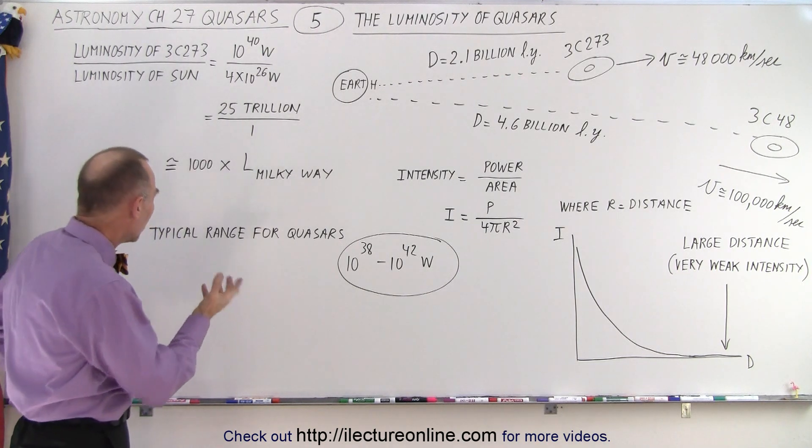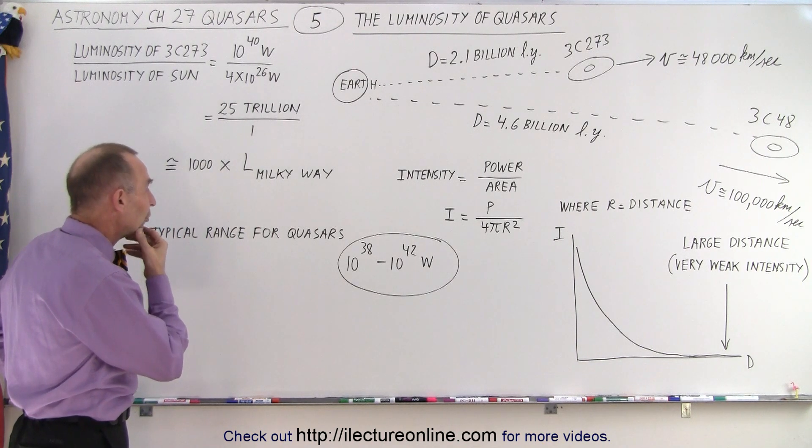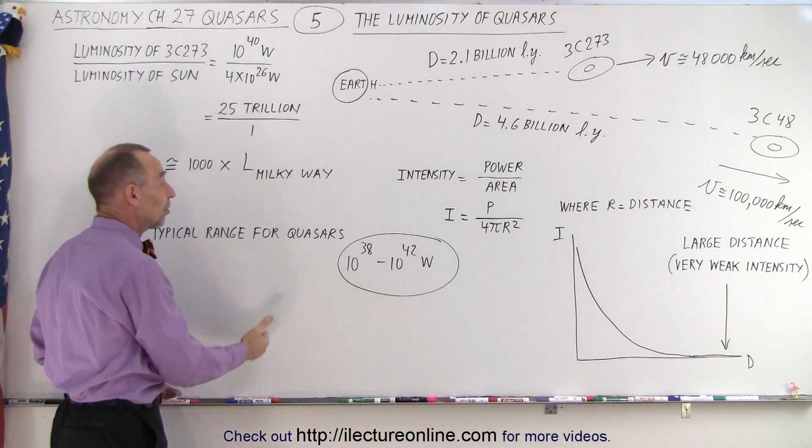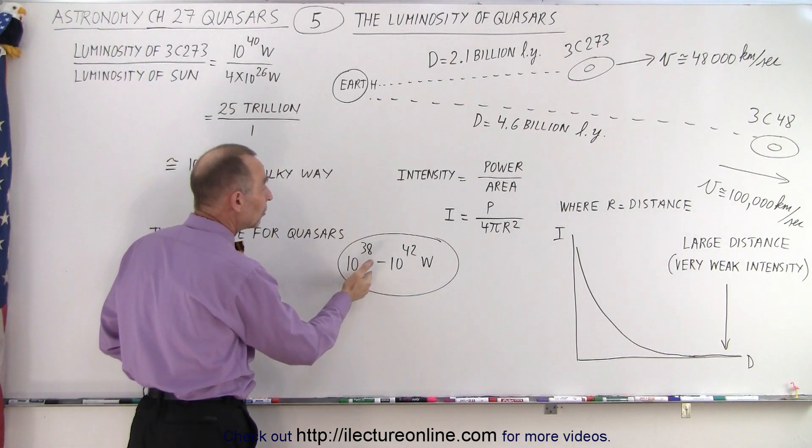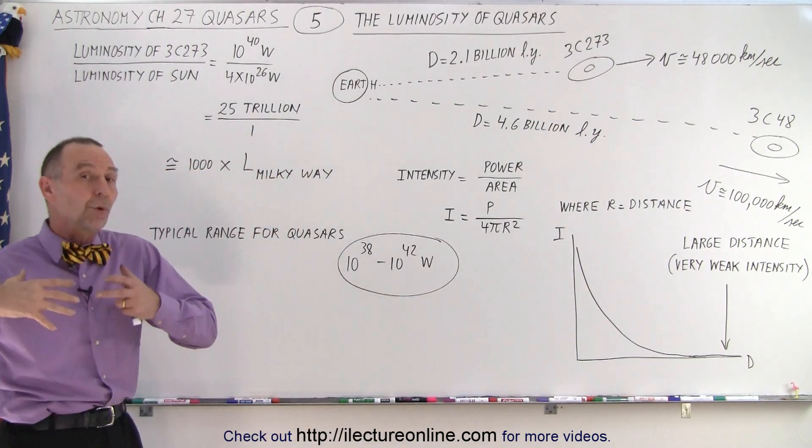Wow! An object that could put out a thousand times the energy of the Milky Way galaxy. So as we continued to study, we began to realize that the typical range for quasars was anywhere from 10 to the 38 to 10 to the 42nd watts.